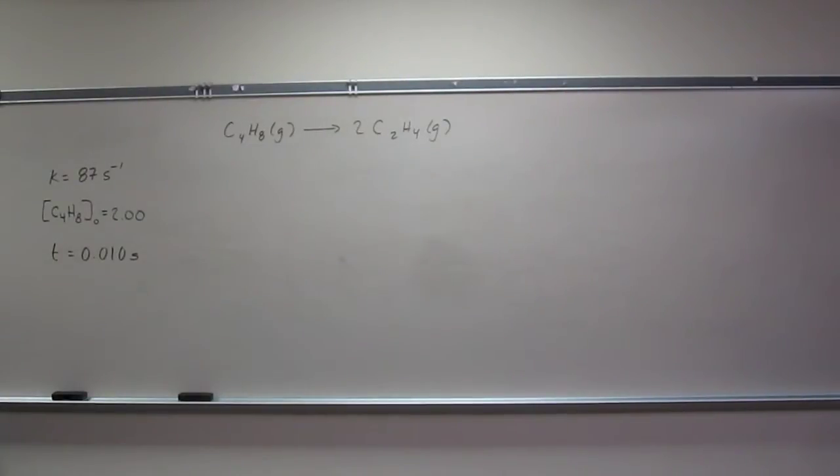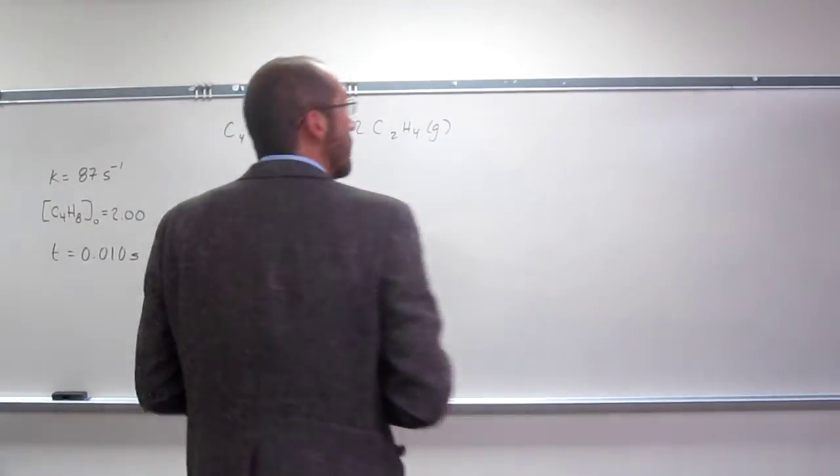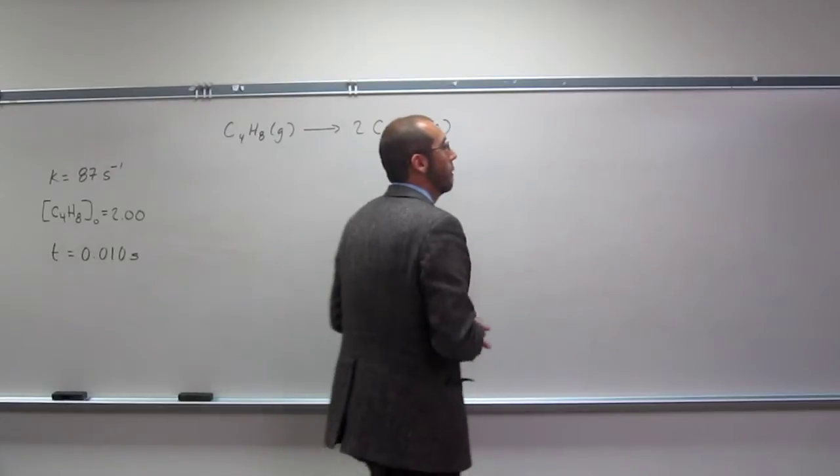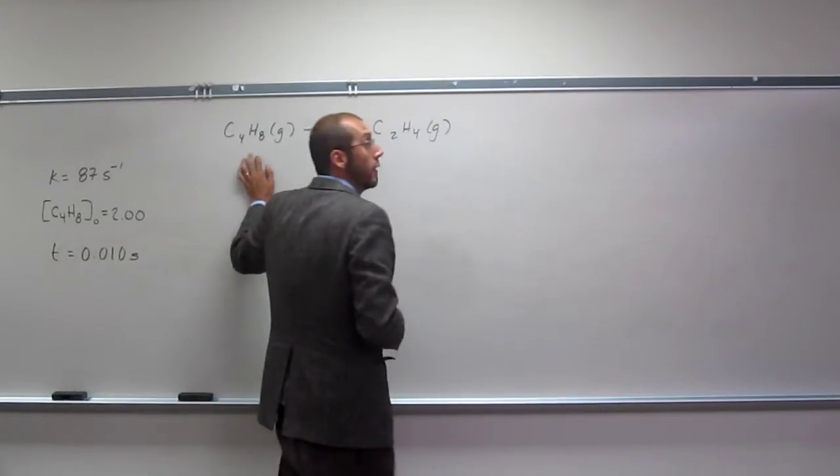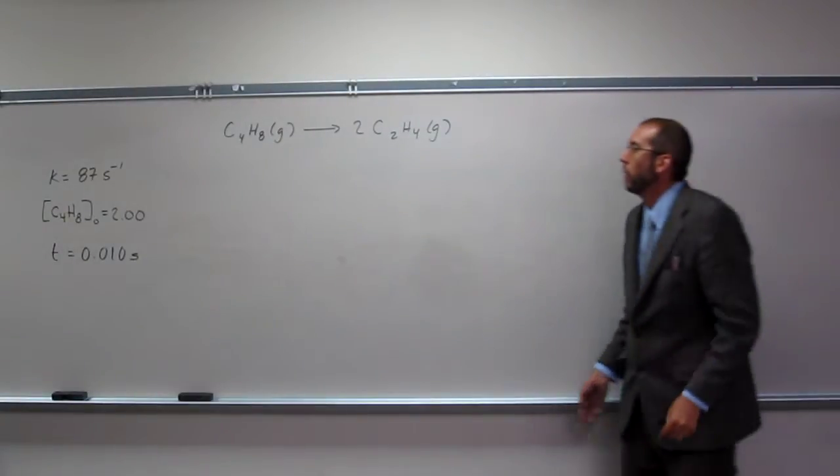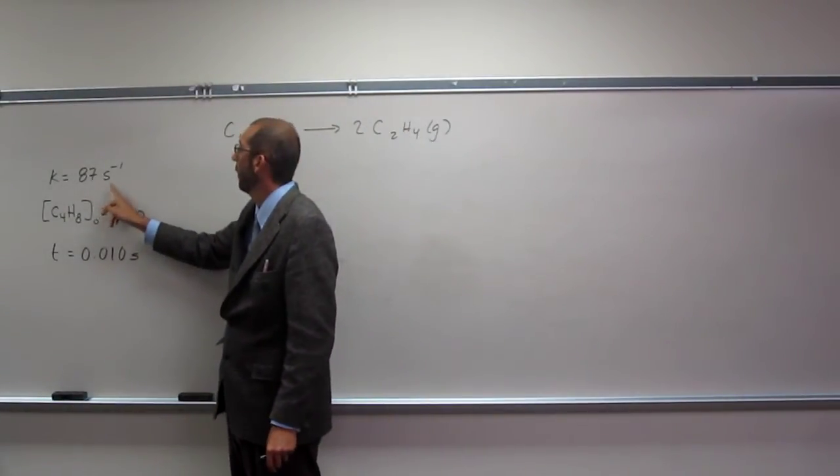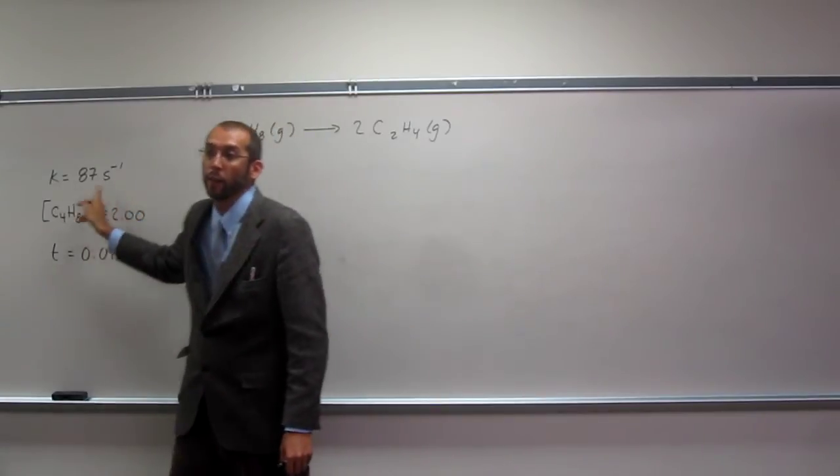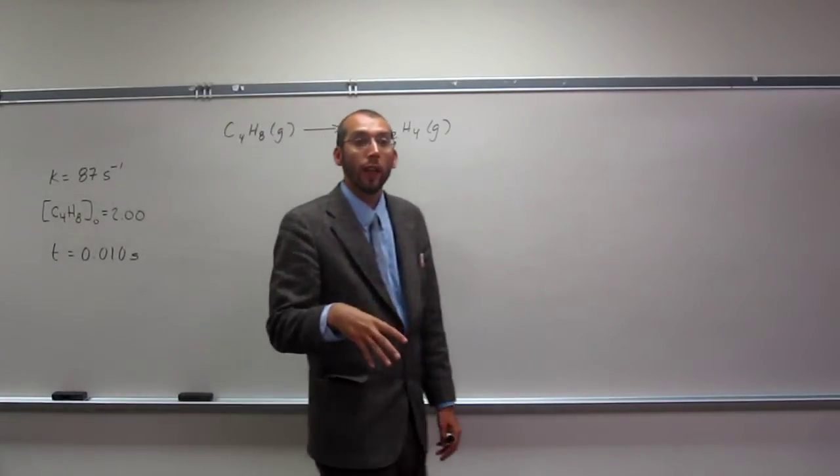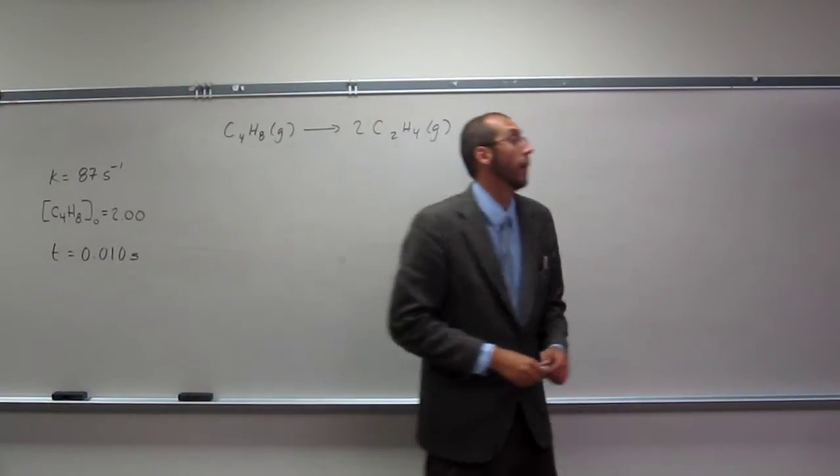Let's do one of these determining a reactant concentration at a given time reaction. So it says at 1,000 degrees Celsius, cyclobutane, which is C4H8, decomposes in a first-order reaction, which we should have already known by looking at the units of K here. Since it's seconds to the negative one, we should realize that it's a first-order reaction already.